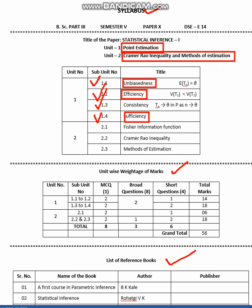Before we start, let us understand unbiasedness. Theta is the population parameter and its value is always unknown. We have to know this parameter through the sample statistic — T_n is the sample statistic. The property of unbiasedness states that if the expected value of T_n equals theta, meaning the expected value of the sample statistic equals the population parameter, then T_n is properly representing theta.